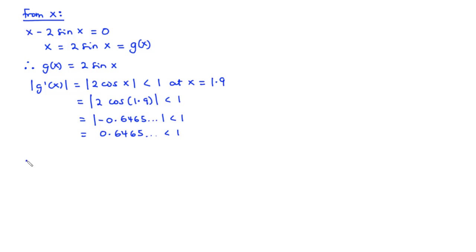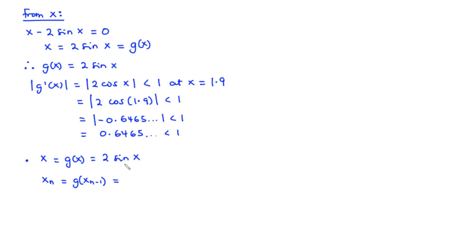Straight away, we can obtain the iterative function. Since x = g(x) where g(x) = 2sin(x), the iterative function is xₙ = g(xₙ₋₁). Wherever we see x in g(x), we replace it with xₙ₋₁, giving xₙ = 2sin(xₙ₋₁). At this point we can perform the various iterations.